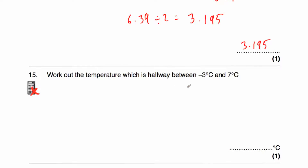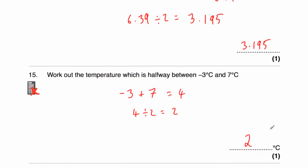Question fifteen involves temperatures: work out the temperature halfway between negative 3 degrees Celsius and 7 degrees Celsius. Negative 3 plus 7: negative 3 add 3 is 0, and then we've got 4 left, so that's 4. Take our 4 and divide by 2: 4 divided by 2 is 2. So the midpoint of negative 3 and 7 is 2 degrees Celsius.